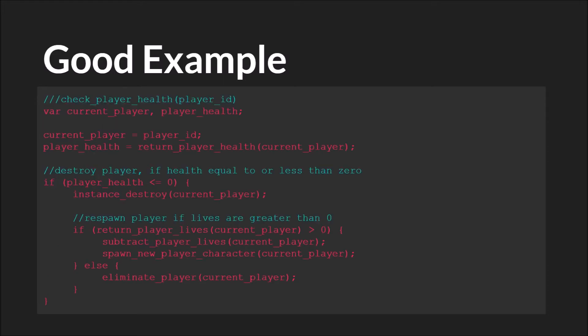I'll pause for just a moment so you can read through the code. This time, it should be much easier to figure out what's going on. In fact, my guess is if you showed this code to someone who didn't understand how to program, they would still have a pretty good idea of what it was supposed to do. It's checking the player's health. If the health is less than or equal to zero, it's destroying the player. Then, if the lives are greater than zero, it's spawning a new player, and otherwise eliminating that player.